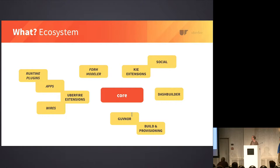FormModeler and DashBuilder are two almost standalone applications. FormModeler provides things we use in relation to jBPM — building forms for human tasks and processes. DashBuilder is a metrics and management information application where you can configure different screens to show different graphs and metrics from different data sources.